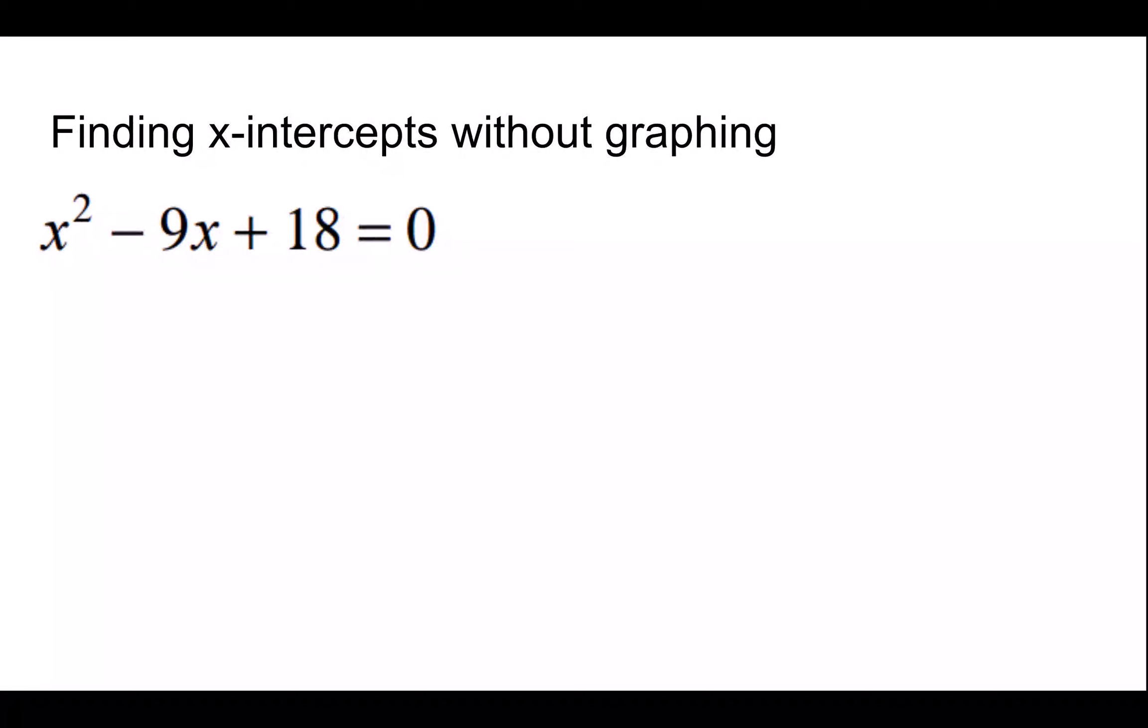And so it would be nice to just be able to solve this thing. So let's see if we can just straight-up solve it. So what most of us would do is we'd subtract 18 from both sides, and we would get x squared minus 9x equals 18.